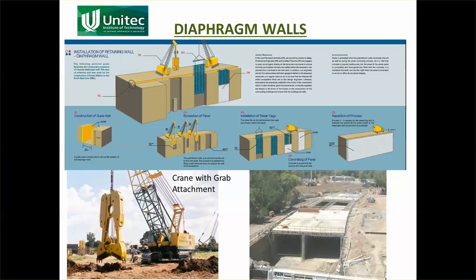Another variation is diaphragm walls. Before excavation starts, a grab attachment on a crane digs out slots, a reinforcing cage is lowered in, and the slot is concreted up. Then the sections between the concrete are excavated, cages lowered in and concreted together. At the end, before excavation even begins, you have a solid wall along the whole length. This method is commonly used for motorways — for example the Victoria Park cut-and-cover tunnel and the entrances to the Waterview Tunnel. Once the roof is in place, it also provides a top support on the diaphragm wall.